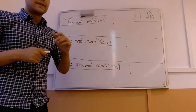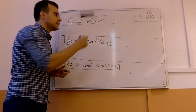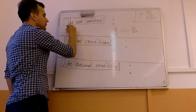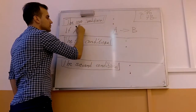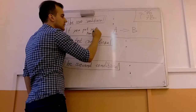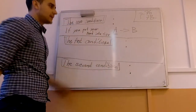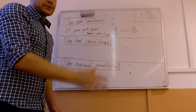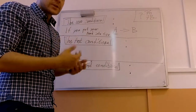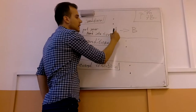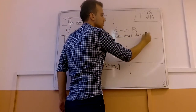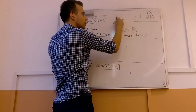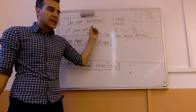The zero conditional is used when I am talking about a law or a fact — so something that if A happens, B always happens too. So if you put your hand into fire, this is A. And if A happens, there is something that always happens too. The fire burns your hand. So if you put your hand into fire, your hand burns.